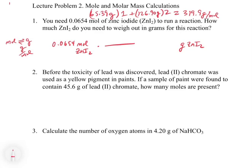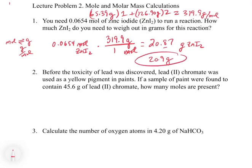We'll set up our unit conversion with moles on the bottom and grams on top, so the moles cancel. For every one mole, we have 319.9 grams. When we multiply 0.0654 times 319.9, we get 20.87 grams of zinc iodide. With significant figures, that's 20.9 grams — that's the final answer for that one.